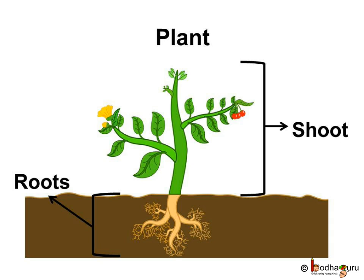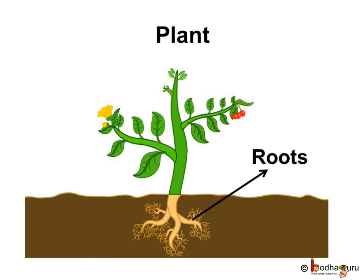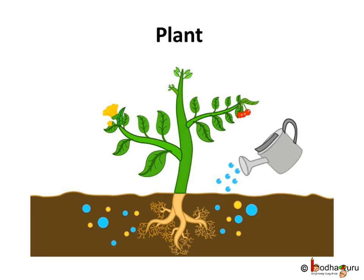The plant has two major parts. The part below the ground is called the root and the part above the ground is called the shoot. Roots are a very important part of the plant. They fix the plant into the soil so it doesn't fall over. Roots take in water and nutrients from the soil that plants require for their growth.